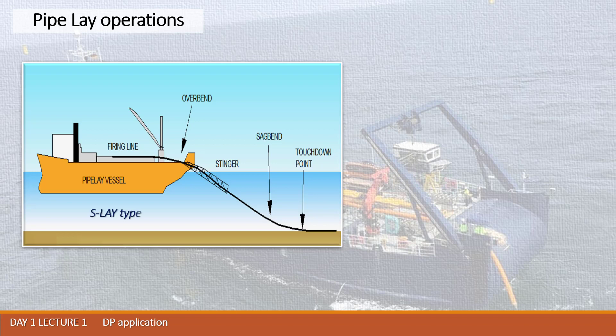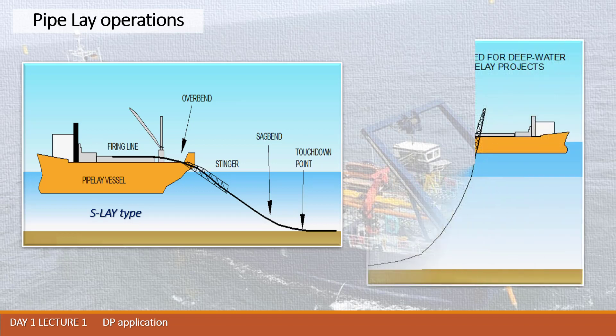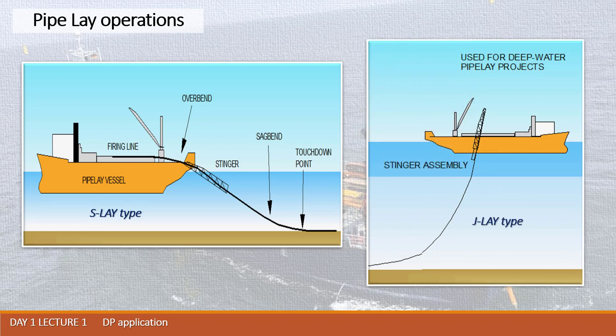In S-lay type of pipe laying, the shape of the laid pipe repeats the English alphabet letter S, and in J-lay, the shape of the pipe repeats the letter J. Those two methods differ due to the place of the stinger. The stinger is the device which discharges the pipe from the firing line to the water, and it is equipped with a set of rollers which allow monitoring of the tension of the pipe on lay down.